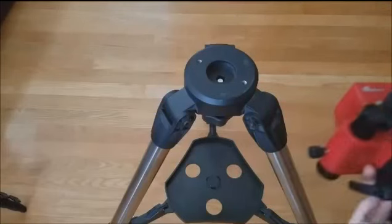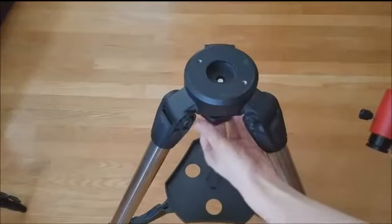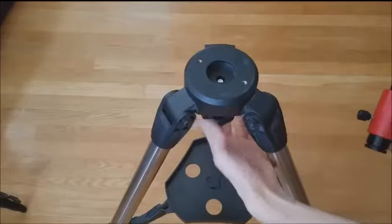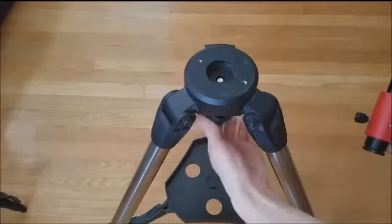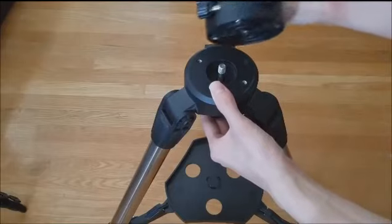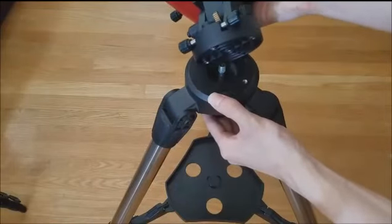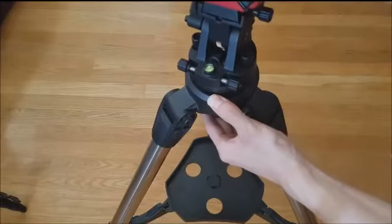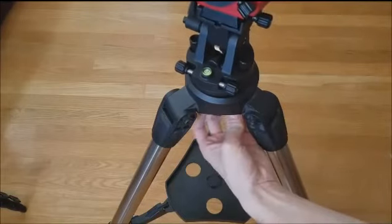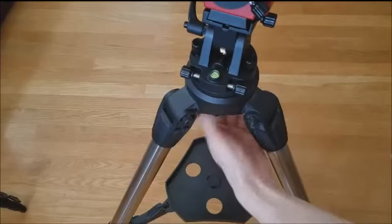Next, you will want to place the mount on a tripod. If you have this recommended tripod, then first you will want to loosen and push up this screw. Then you will want to place the mount directly on top of it. Once it has been aligned correctly, turn the screw counterclockwise to secure the mount to the tripod.